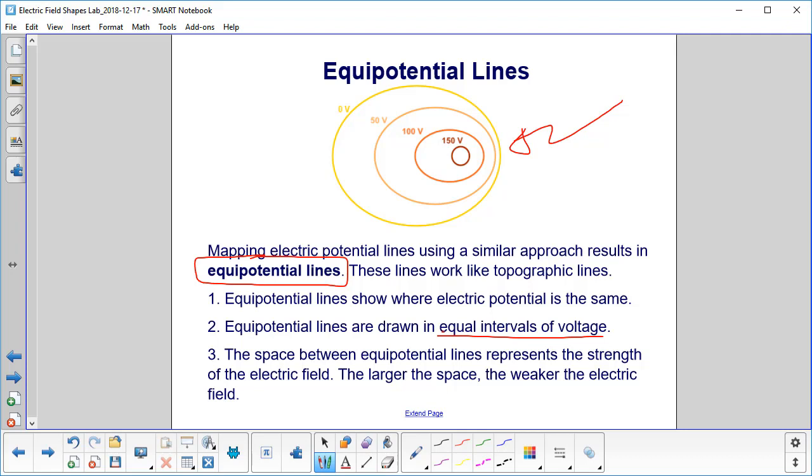And the space between the equipotential lines represents the strength of the electric field. With the topographic, it was how quickly you went between heights, and now it's how quickly you go between voltages. The larger the space, the weaker the electric field.